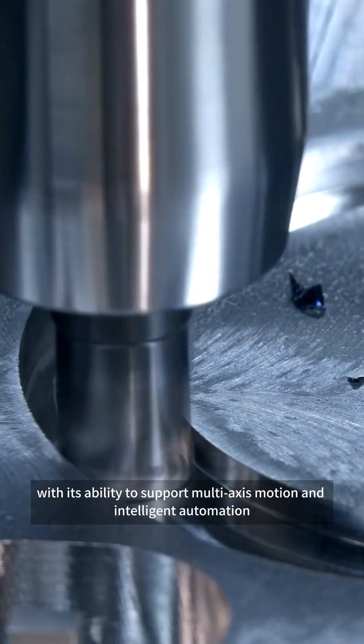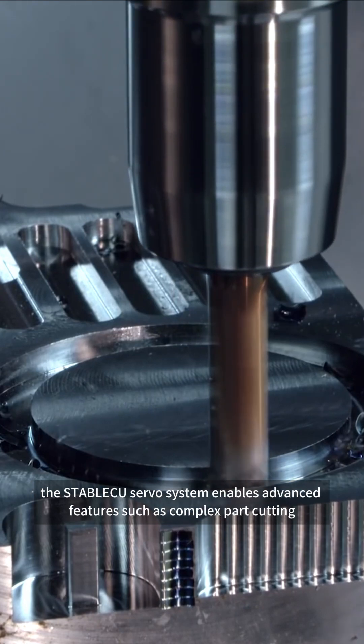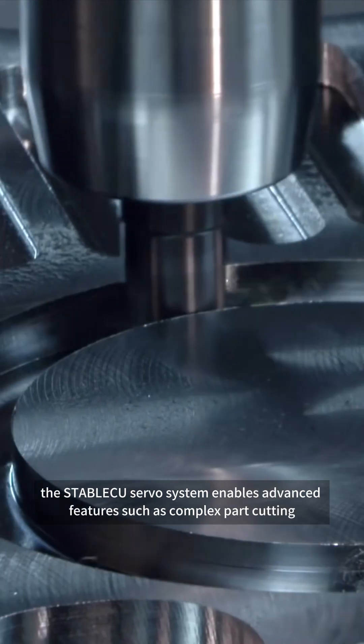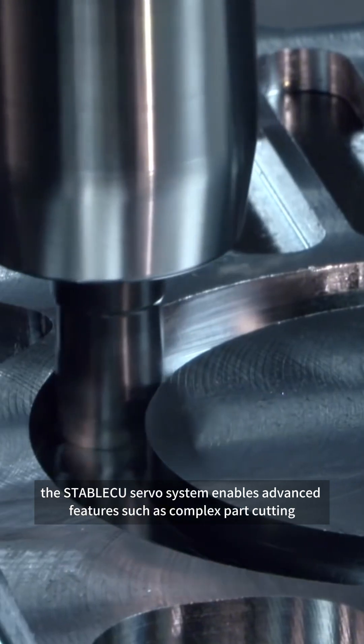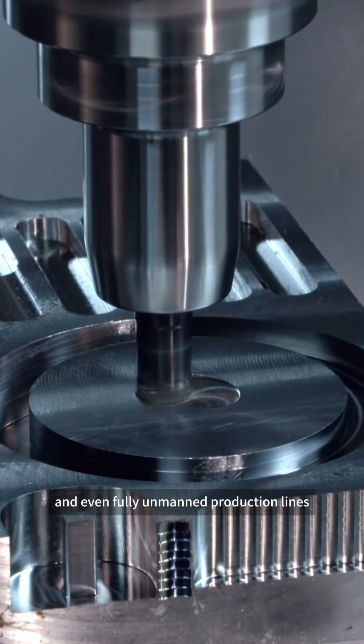Finally, with its ability to support multi-axis motion and intelligent automation, the stable CU servo system enables advanced features such as complex part cutting, automated loading and unloading, and even fully unmanned production lines.